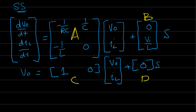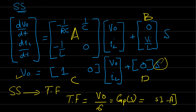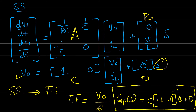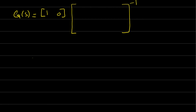To convert from state space to transfer function, we know the transfer function is output over input — V_out over switch state. The transfer function is G(S) = C·(SI - A)^(-1)·B + D. Applying this with our matrices: G(S) = [1, 0] times (SI - A)^(-1) times [0; V_in/L].